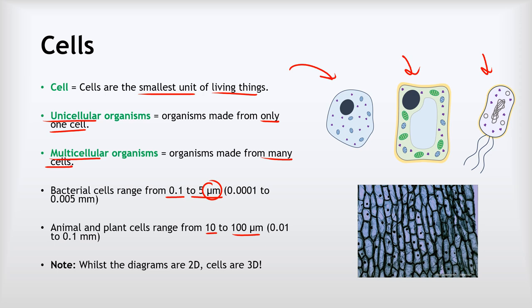It's just worth noting that whilst the diagrams we draw are always two-dimensional, cells are actually three-dimensional objects. We view them as two-dimensional when we see them under a microscope like that, but that's because we're looking at a top-down view, so we don't get that whole 3D depth to them. But we must bear in mind that they are three-dimensional objects.